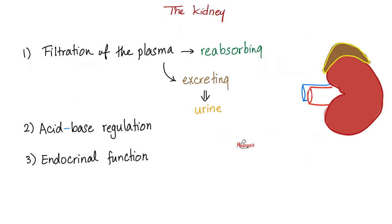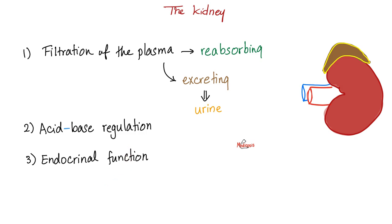The kidneys have many functions, including filtration of plasma. The good stuff should go back to the blood — this is called reabsorption. The bad stuff should be dumped into the urine — this is called excretion. The kidney can also regulate your acid-base status and your blood pH. Don't forget that your kidney has endocrine function, such as the secretion of renin, the active form of vitamin D, and erythropoietin to boost the formation of your red blood cells, and many others.